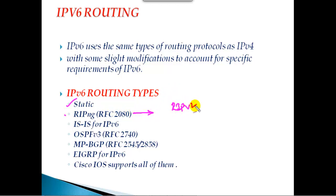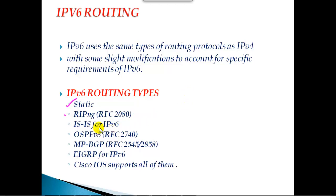In IPv4 we had RIP version 2, and here we call it RIPng — Next Generation RIP. The metric and features remain the same: the maximum hop count is again 15, and the metric is calculated based on hop counts. The only difference is the way we configure it. IS-IS also supports IPv6, and OSPFv3 — the protocol we use for IPv4 is OSPFv2, and here we call it OSPFv3.